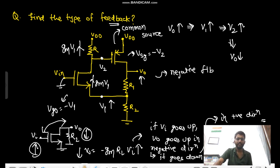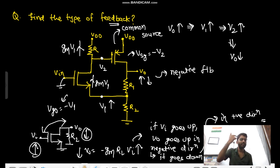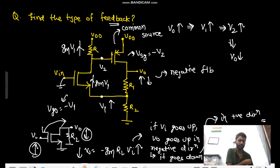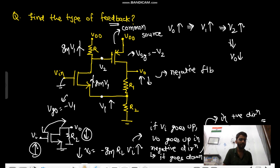To summarize: V0 goes up, this node goes up, this node also goes up. Since this is in common source configuration, this node goes down. So if we are increasing V0, eventually the output is getting decreased — we have negative feedback. In a common source amplifier, there is inverting behavior: if you increase the input, output goes down.